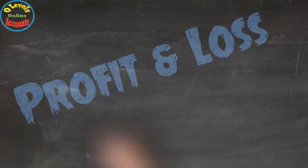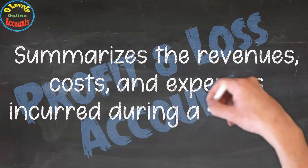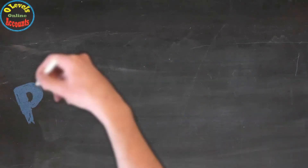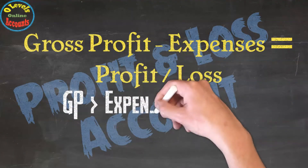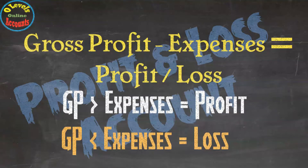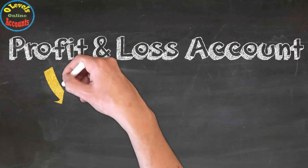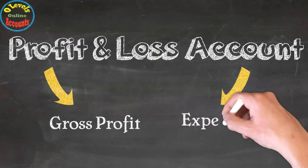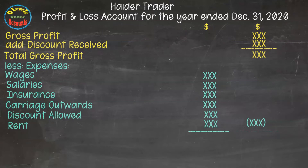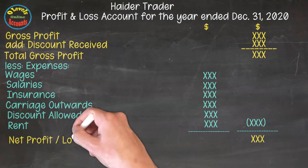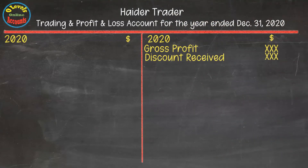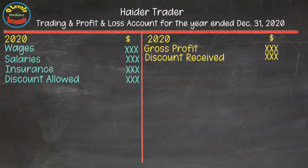What is the Profit and Loss Account? It summarizes the revenues, costs, and expenses incurred during a specified period. It starts after the trading account, beginning from gross profit. In the vertical format, we put the gross profit first, then minus all expenses associated with the business, to get the final result as net profit. In the horizontal format, gross profit goes on the credit side and expenses on the debit side, with the balance being net profit or net loss.